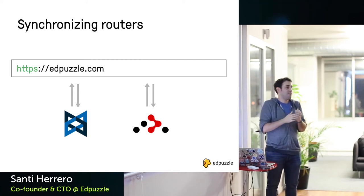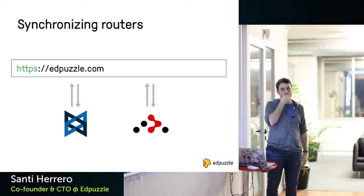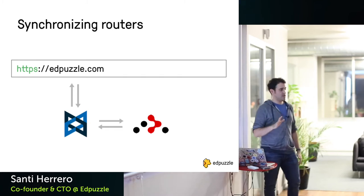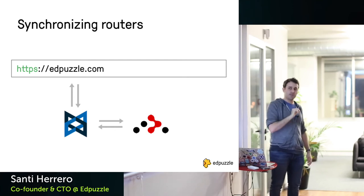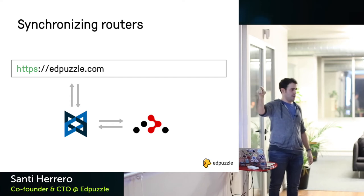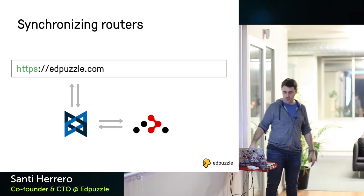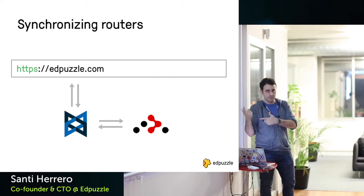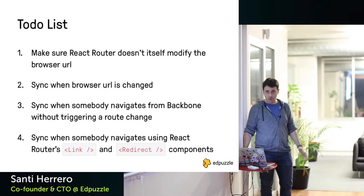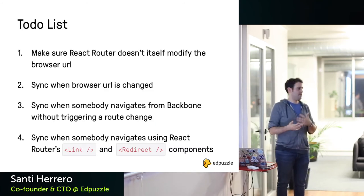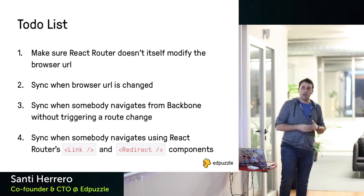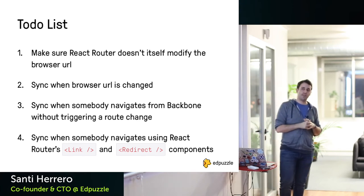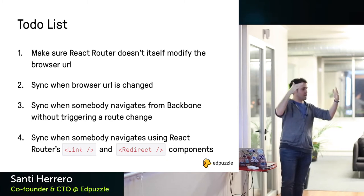The approach: Backbone is the ruler with access to the URL. It is responsible for telling React Router when the URL changes. Why Backbone and not React Router? Because most of the app is written in Backbone — if you made React Router the dominant one you'd have to change a lot more code. The checklist to make this happen: make sure React Router does not modify the URL bar itself, sync both routers when the URL changes, sync on silent navigation when you change the URL without triggering a route change.